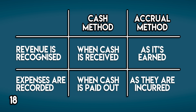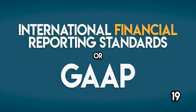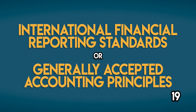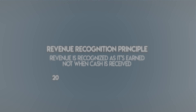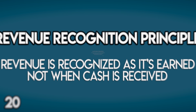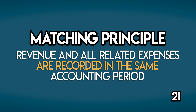The accrual method is a must for all big businesses because they usually have to follow IFRS or GAAP — the International Financial Reporting Standards or the Generally Accepted Accounting Principles — both of which require the accrual method. The accrual method applies the Revenue Recognition Principle, which says revenue should be recognized as it's earned, not when cash is received, meaning a business records revenue when it delivers a product or service. It also applies the Matching Principle, which says that revenue and all expenses incurred to generate that revenue need to be recorded in the same accounting period.